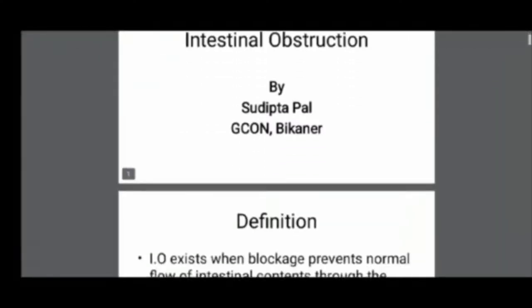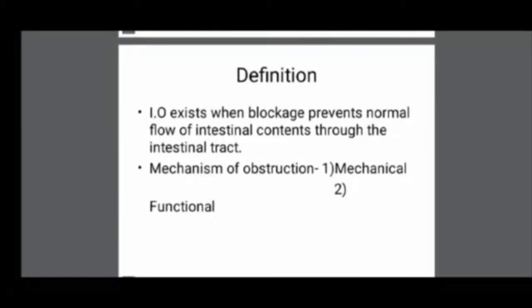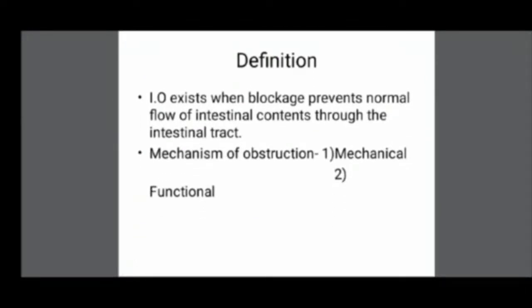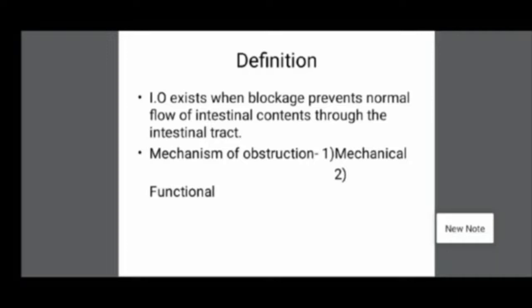Intestinal obstruction exists when there is a blockage that prevents the normal flow of intestinal content throughout the intestinal tract. Anywhere in the intestine, either in the portion of the small intestine or large intestine, if there is any type of blockage, it will prevent the normal flow of intestinal content to pass through, causing obstruction.